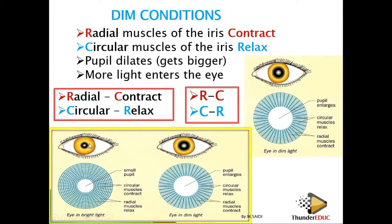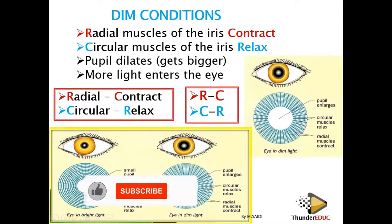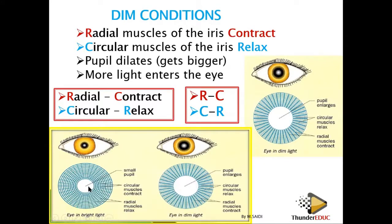During bright light, the pupil is small. During dim light, the pupil is big. If you look at it structurally, you find that the spaces are not the same — the space where light passes is small in bright light compared to dim light. This one has constricted while this one has dilated. During dim light, more light enters the eye, while during bright light, less light enters the eye.